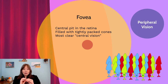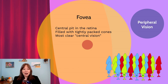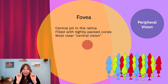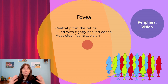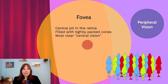The fovea is a specific part of the retina — drawn here as a small red circle — right where our central vision shines. It's the central pit of the retina, tightly packed with the highest density of cones. This is where you get the brightest, most detailed central vision and where colors are seen with the best visual acuity. Our peripheral vision does take in color, but central vision is more efficient at processing it.